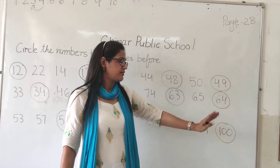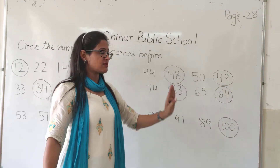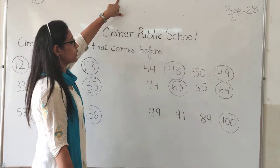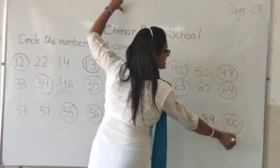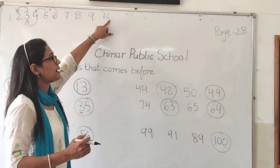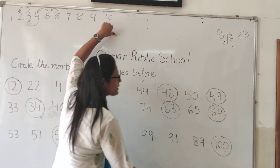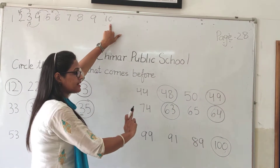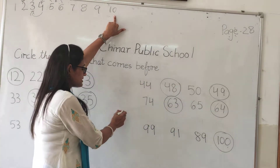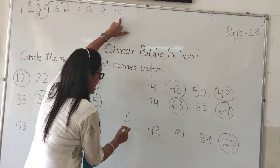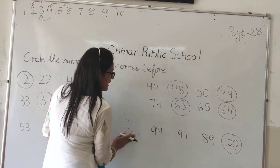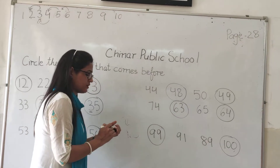Now it is 100. Which number comes before 100? Look at the last digit, 0. Before 0 comes 9, but here after 1 comes 0, so the number before 100 is 99. Circle 99.